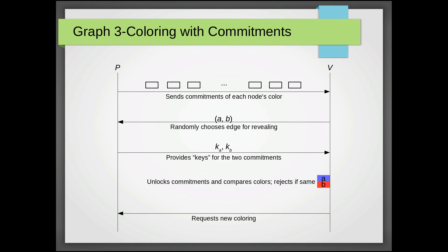So once V receives these keys, it can unlock the boxes and compare the colors. If they're the same, it can reject. If not, it can just request a new coloring. So this can repeat over and over again for those M squared rounds as V builds its confidence that this graph does have a valid three coloring.